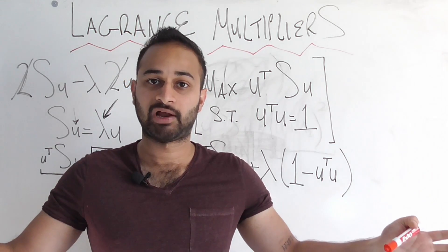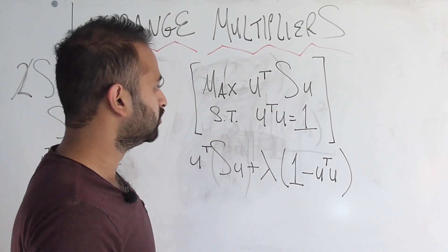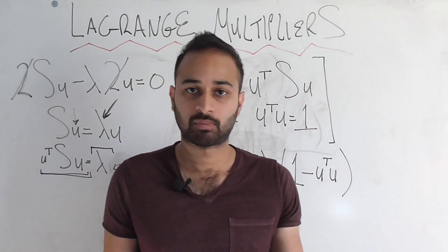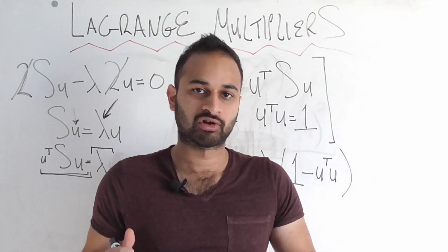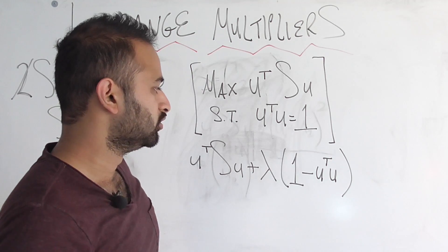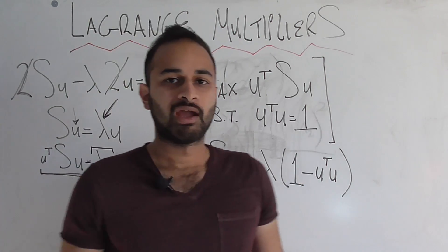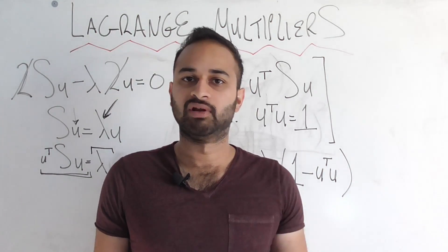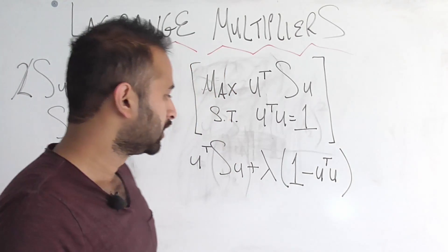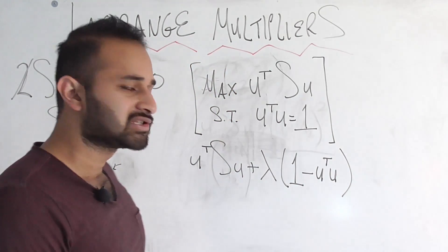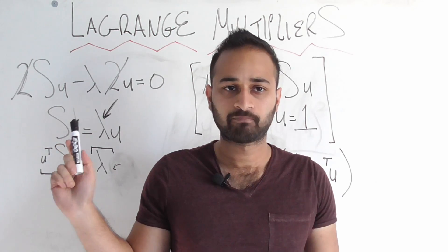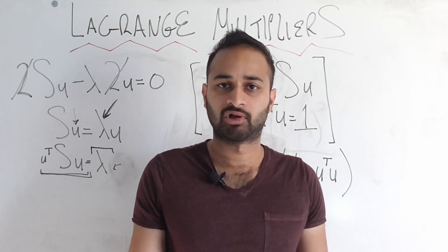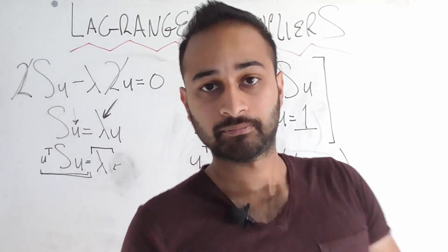And that's how you use Lagrange multipliers. That's about it. They just come in when you have a maximization or minimization problem. But you also want to set some kind of constraint so things don't get out of control. You basically take that constraint, you internalize it into the problem, and then you go ahead and you take your derivative as you always would. And that is about it. That's how you use a Lagrange multiplier. And we're going to be using this in our principal component analysis video. So until next time.